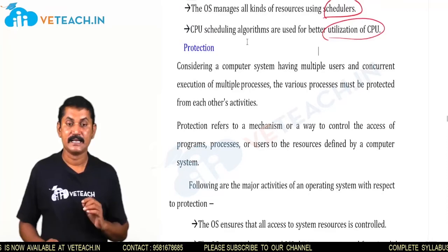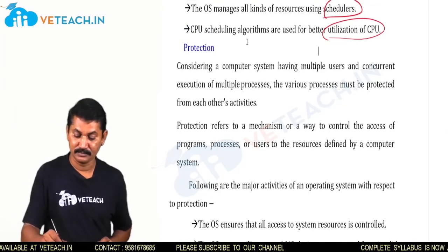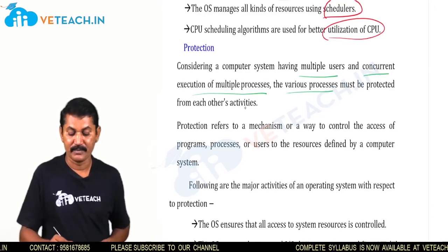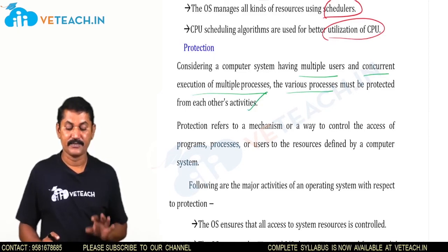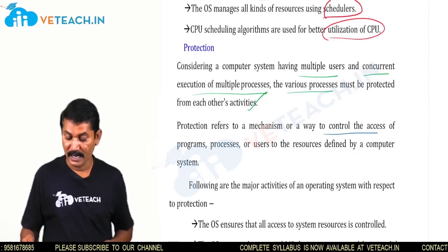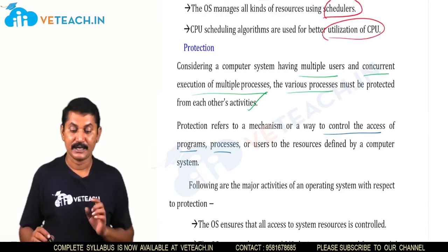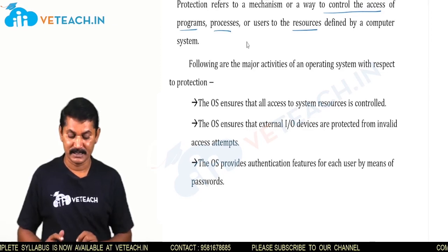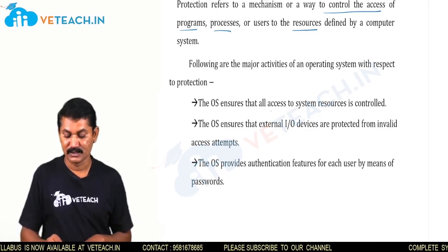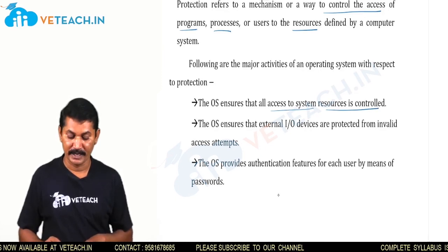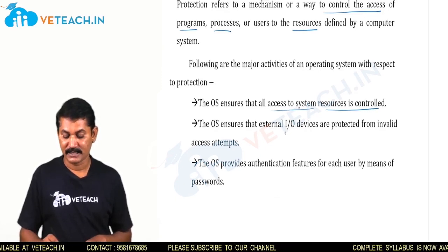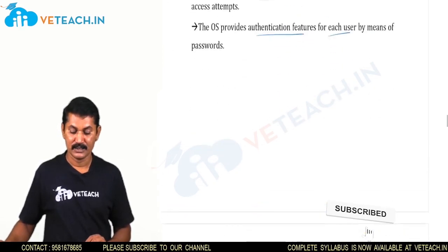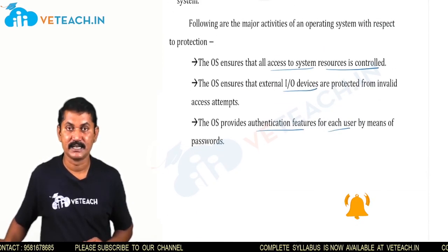For protection, in a computer system with multiple users and concurrent execution of multiple processes, various processes must be protected from each other's activity. Protection refers to the mechanism to control access by programs, processes, and users to resources. The OS ensures that all access to system resources is controlled, manages external I/O devices, and provides authentication features for each user by means of a password. Thank you students — we will continue in the next session with a new topic.